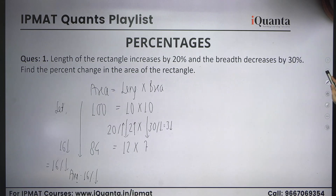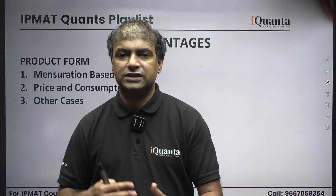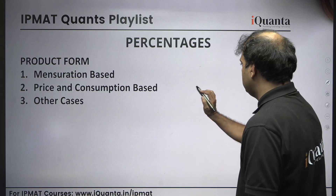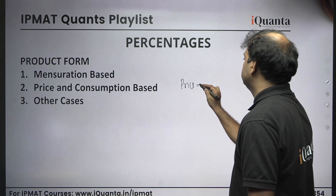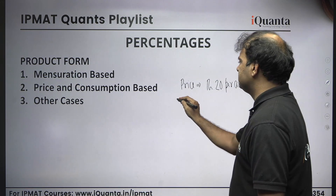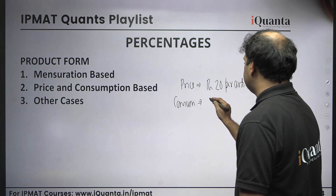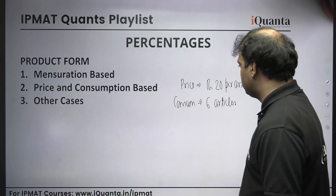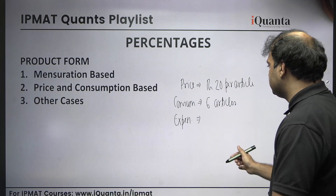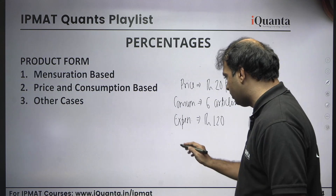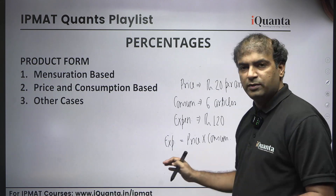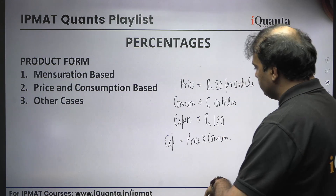Now let's move to the price and consumption application. There's a formula that relates price, consumption, and total expenditure. For example: price of an article is ₹20 per article, consumption is 6 articles — total expenditure is 120 rupees. So the formula is: expenditure = price × consumption. This simple formula will be used to solve price and consumption questions.